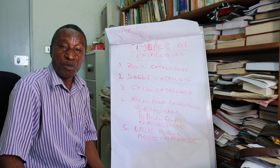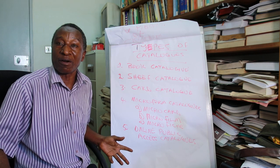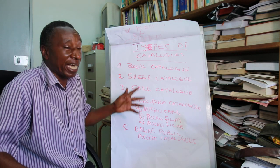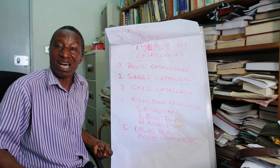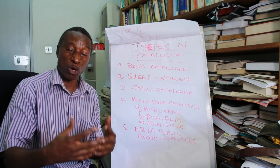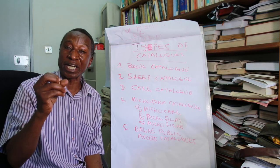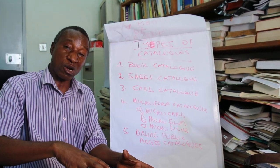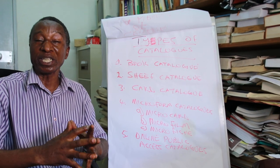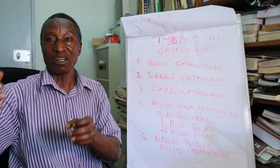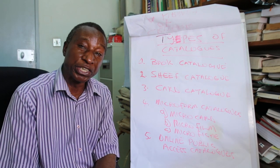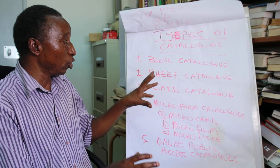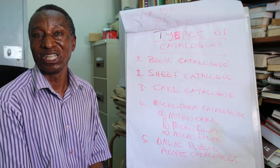Last time we were looking at the functions of a library catalog, and this time around we want to look at the types of library catalogs. Library catalogs in terms of types can be looked at from two angles. The first angle is the physical format in which these catalogs are prepared. The second angle is the arrangement of bibliographic records in that catalog. This particular lecture is looking at the physical formats of catalogs.